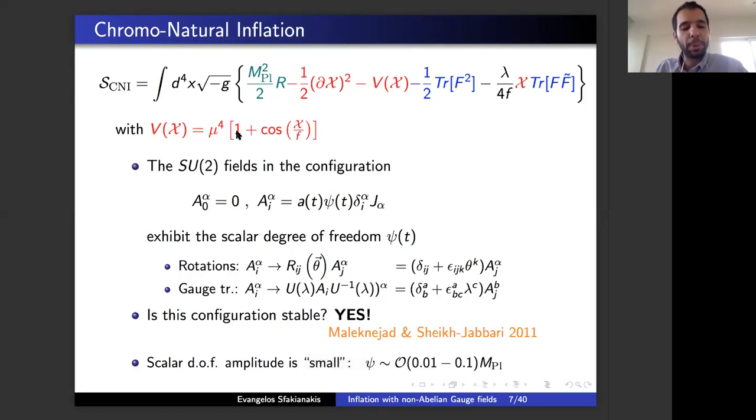The next step in looking into these models is considering an SU(2) gauge field. We know SU(2) gauge fields exist in nature, so it's not an exotic form of matter. I'm writing a very simple action. We have Einstein gravity, just a single scalar axion field with a potential, and an SU(2) gauge field coupled through a Chern-Simons term with this axion. I will consider the axion to have the usual cosine potential, although this is not necessary.